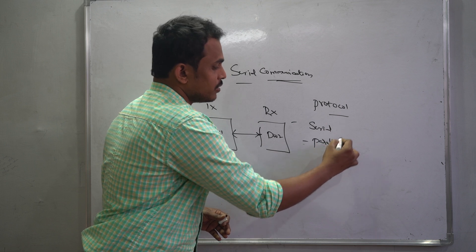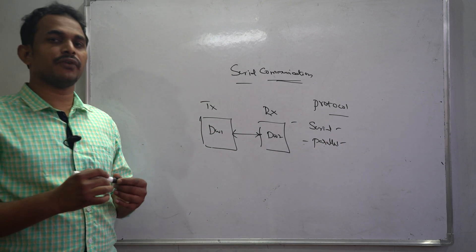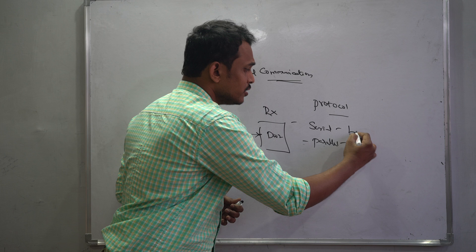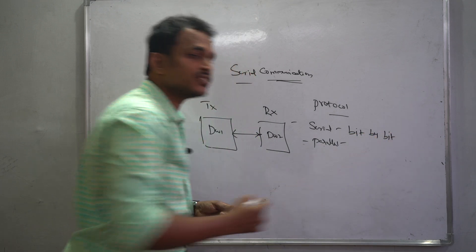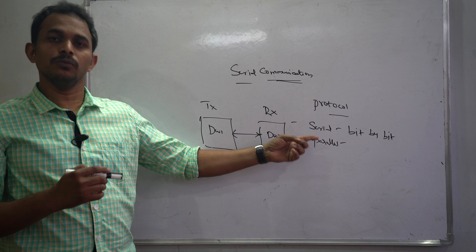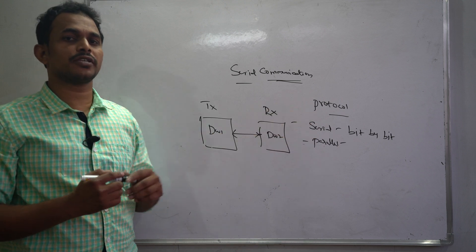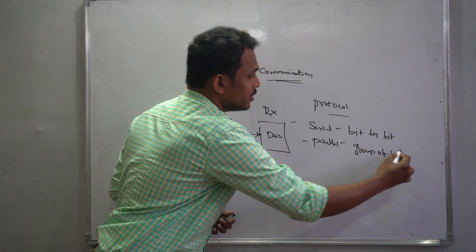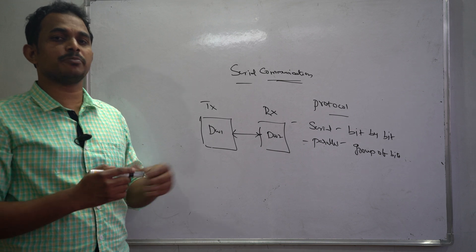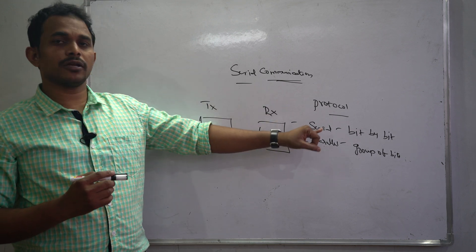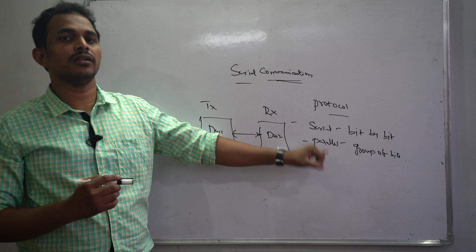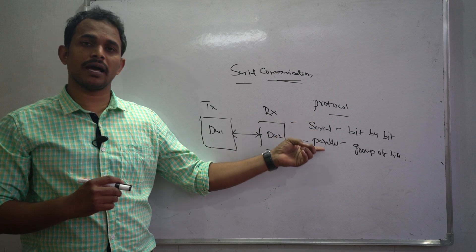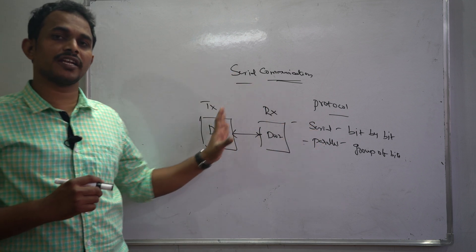Serial communication means we are transferring data bit by bit. Whenever you want to transmit your data, it is transferred bit by bit. In parallel communication, a group of bits is sent at the same time, but that requires many physical lines between two devices. That's why nowadays people prefer serial communication over parallel. For all short distances, the ultimate aim — whether serial or parallel — is to share data between two devices.